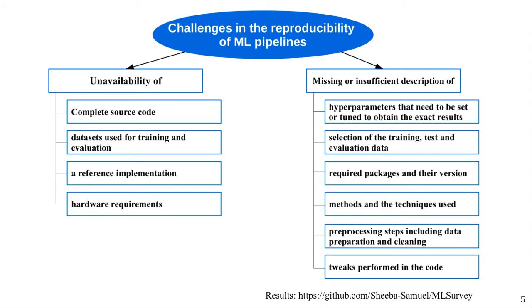A machine learning pipeline consists of a series of ordered steps used to automate the machine learning workflow. We conducted an internal study among 15 domain experts to understand what is needed to achieve reproducibility of machine learning experiments. Relevant challenges include: unavailability of complete source code, data sets used for training and evaluation, a reference implementation, and hardware requirements. Also missing or insufficient description of hyperparameters, selection of training, test and evaluation data, required packages and their versions, tweaks performed in the code not mentioned in the paper, methods and techniques used, and preprocessing steps.